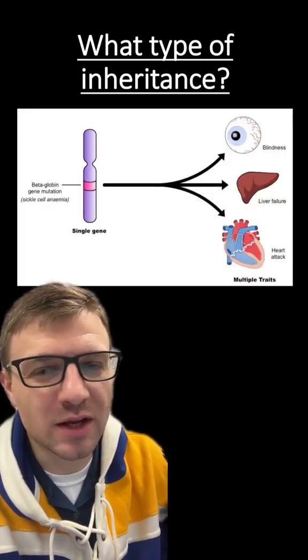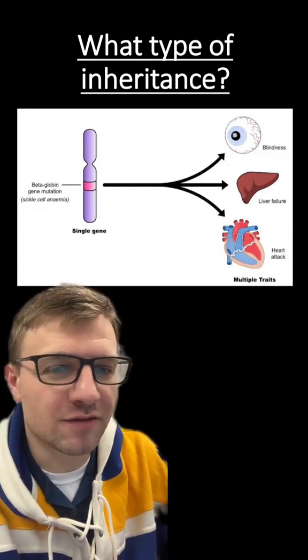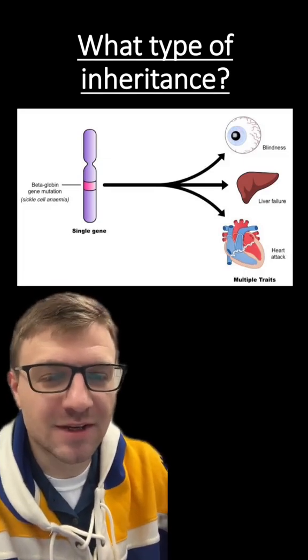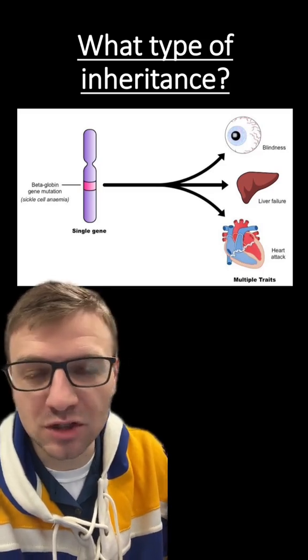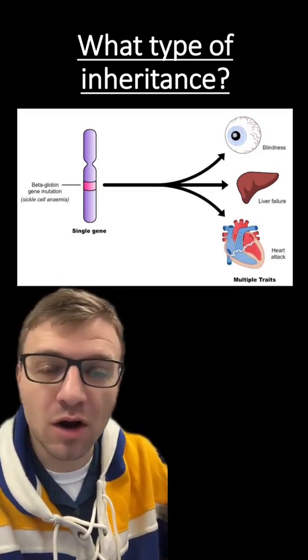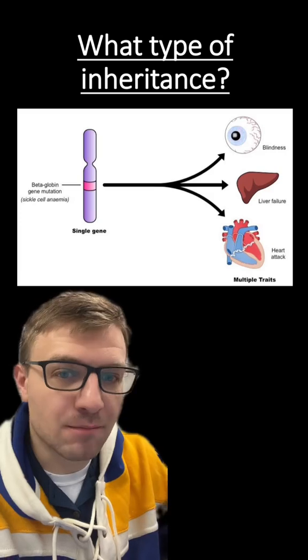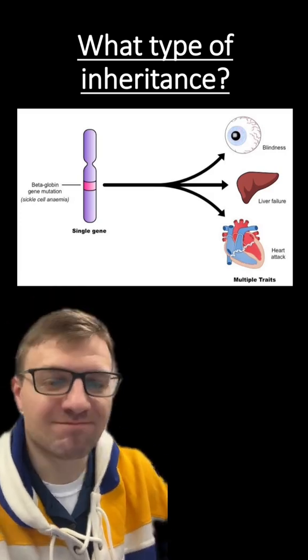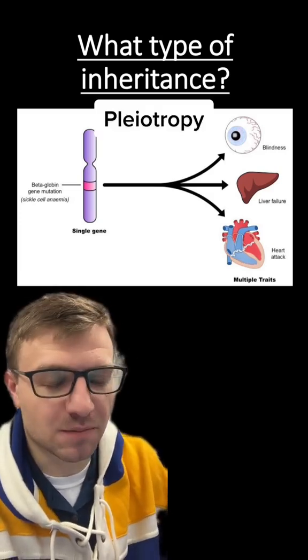All right, here's the first one. This is when a single gene is going to affect many different phenotypes. In this case, it's the beta-globin gene mutation. And this single gene can create blindness, liver failure, or heart attacks in an individual. So again, multiple traits are affected by one gene. And this is an example of pleiotropy.